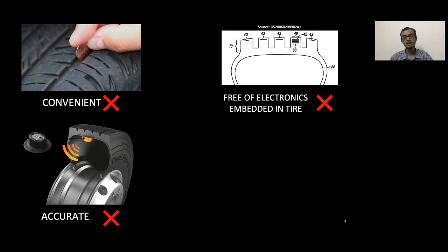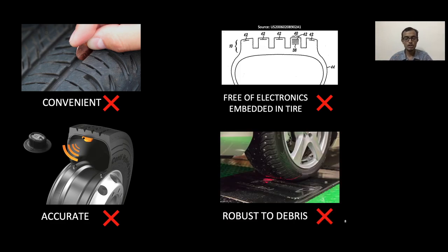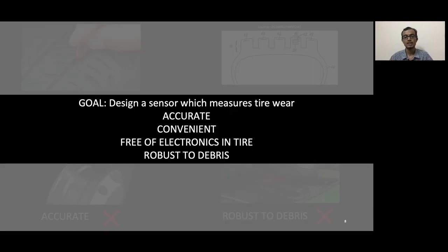Lastly, there is another solution which involves you driving into a garage, getting your car clean, and laser scanning the tire. While laser scans can be extremely accurate, the main killer is debris—any amount of debris which is left uncleaned will cause the laser scans to be completely useless. Thus we have the four important characteristics for our system, which is it needs to report accurate data in a convenient manner, which should not have any sort of electronics embedded in the tire, and it should be robust to the accumulation of road debris.